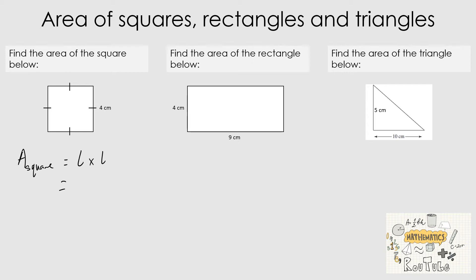Because we know that the length is 4 centimeters, we substitute that value into the formula: 4 times 4, which is 16. When answering measurement questions, always include the units — in this case centimeters — and whenever we calculate area, it is always in square units, to the power of 2. So the area of that square is 16 centimeters squared.